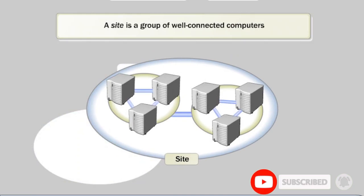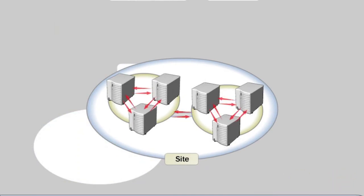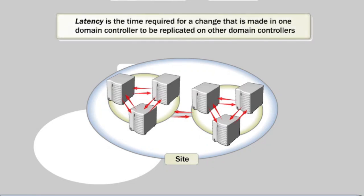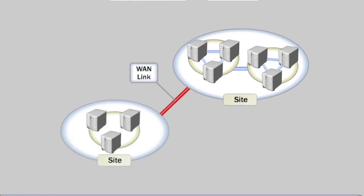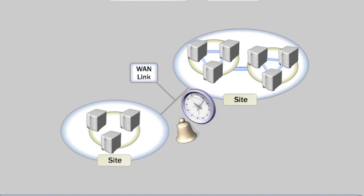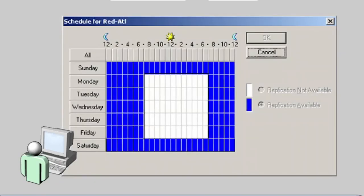A site is a group of well-connected computers. After sites are established, domain controllers within a site communicate frequently, which minimizes latency within the site. Latency is the time required for a change made on one domain controller to be replicated on other domain controllers. You create sites to optimize the use of bandwidth between physically separated domain controllers. You can configure domain controllers in separate sites — which may be linked by slower communications — to communicate only at scheduled times, typically when replication traffic has minimal impact on other network traffic.